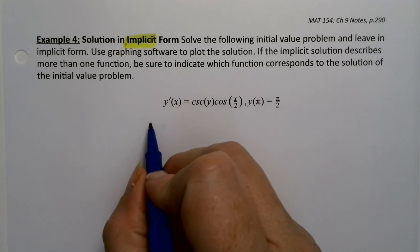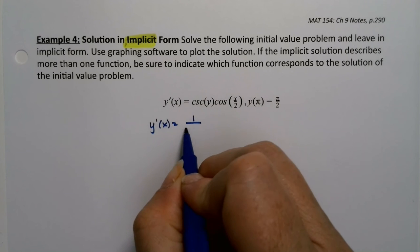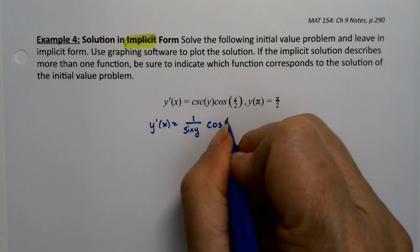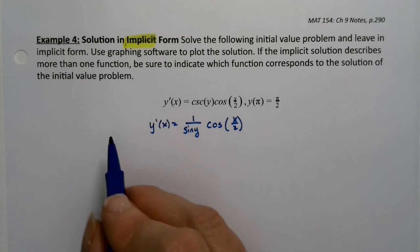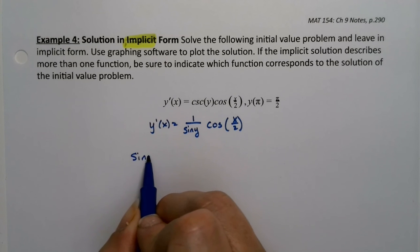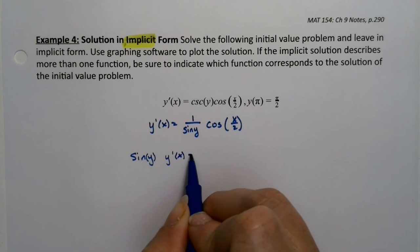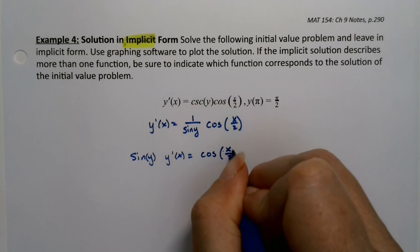Okay, well one thing I might want to remind myself of is that cosecant is 1 over sine by definition. It's one of the identities, one of the many identities we learn in pre-calc. So that means I can multiply both sides by sine of y.